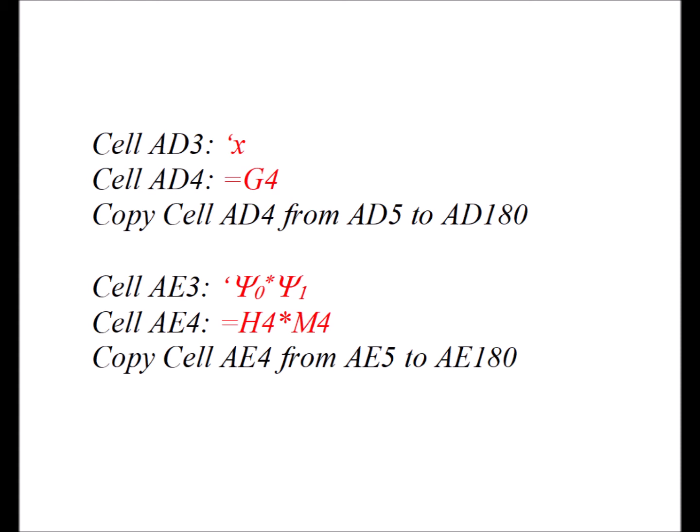In cell AE3, we have the label psi0 star psi1. Cell AE4 is going to be the formula H4 times M4, and then we copy the cell AE4 from AE5 all the way up to AE180.